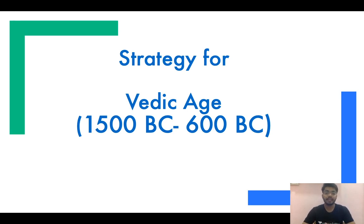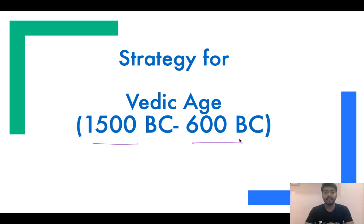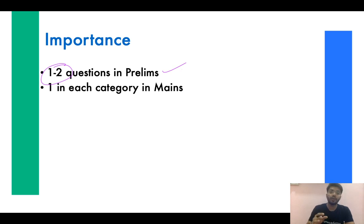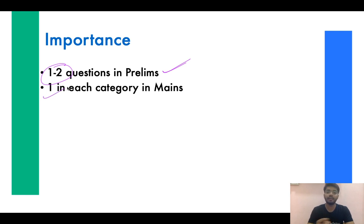Hello friends, welcome to One Academy. This is Harshal Chaudhary, and today we will be discussing the strategy for the Vedic Age, which runs from 1500 BC to 600 BC. For MPPSC prelims or mains, we will discuss how to prepare and which topics to focus on. From this topic, you can expect at least one to two questions in prelims, since there are many terms in the Rigveda and ancient Vedic literature from which objective questions are directly formed. In mains, whether it's 3 marks, 5 marks, or 11 marks, you can expect at least one question across all categories.